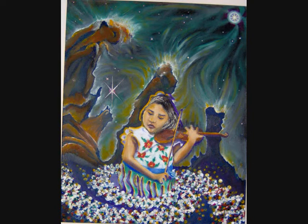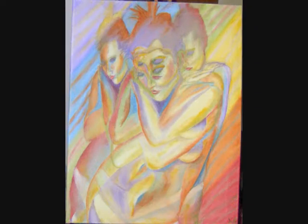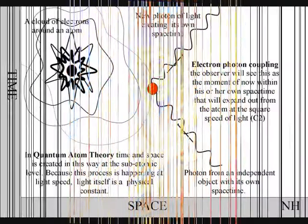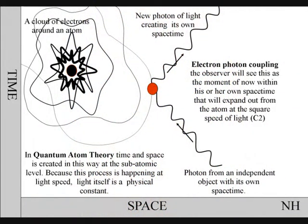In quantum atom theory, the wave-particle duality of light creates time itself. Time is being created continuously by electron-photon couplings. When a quantum particle wave function of light makes contact with an electron on the surface of an atom, there is a photon-electron coupling and a quantum leap of energy.